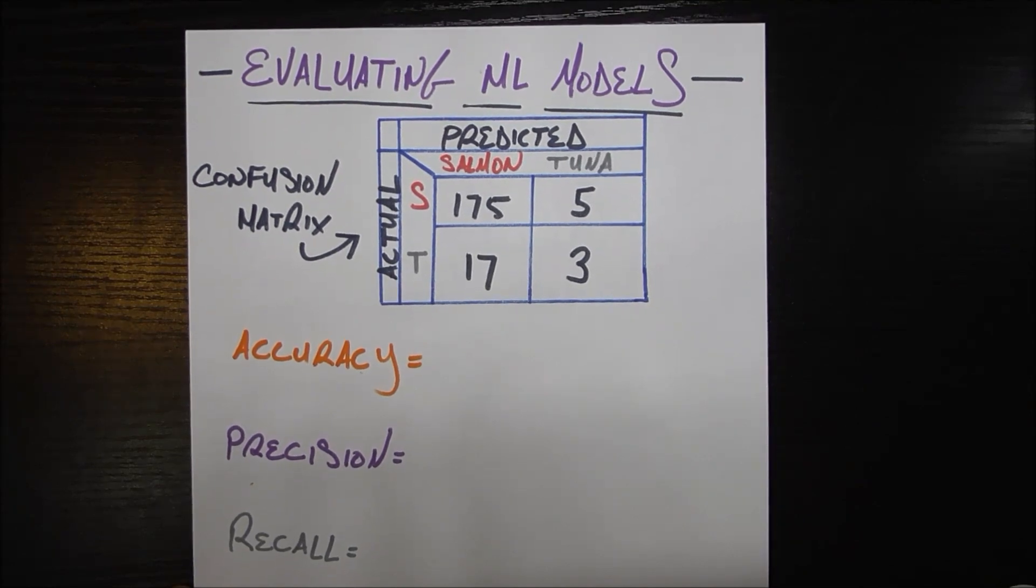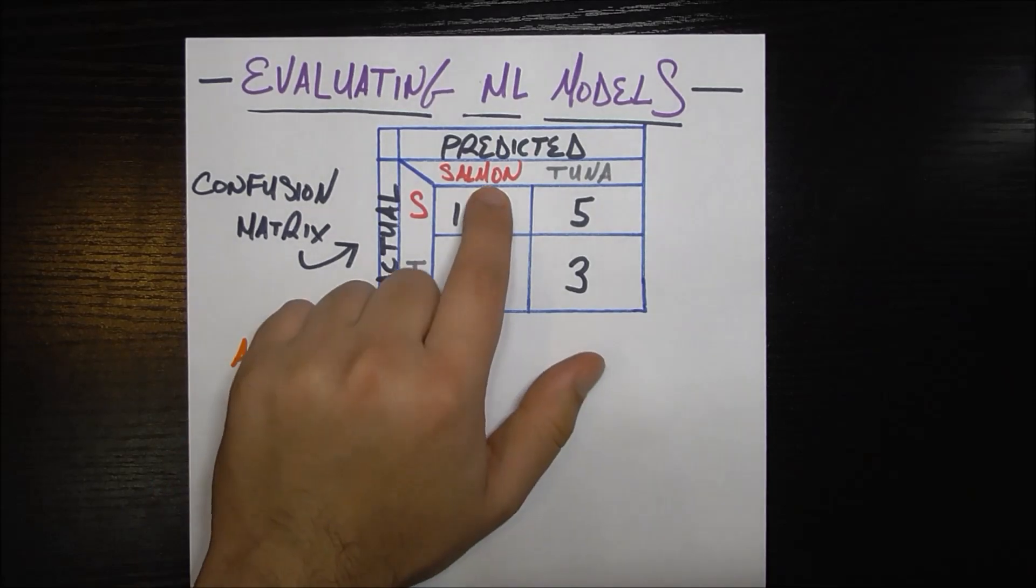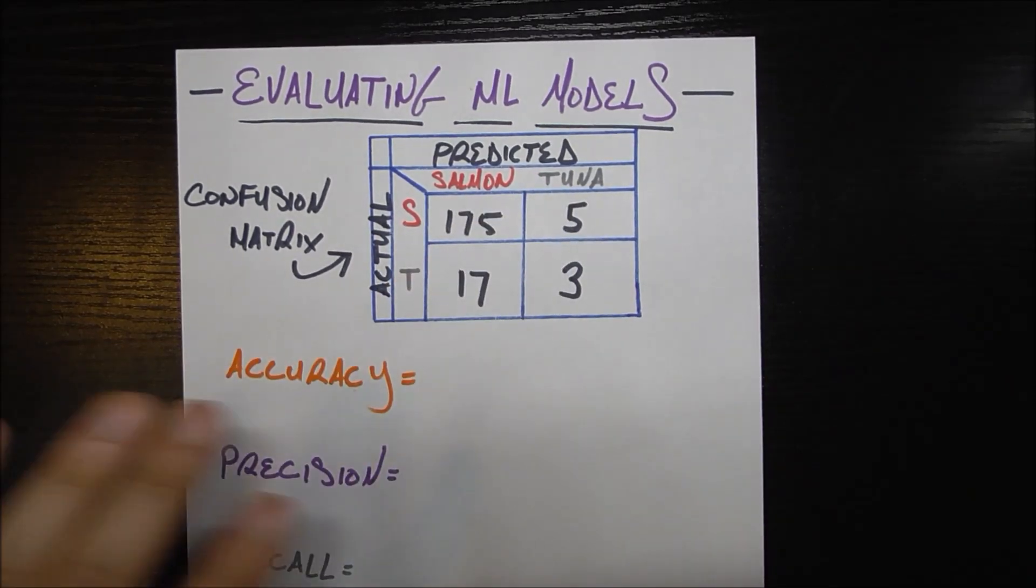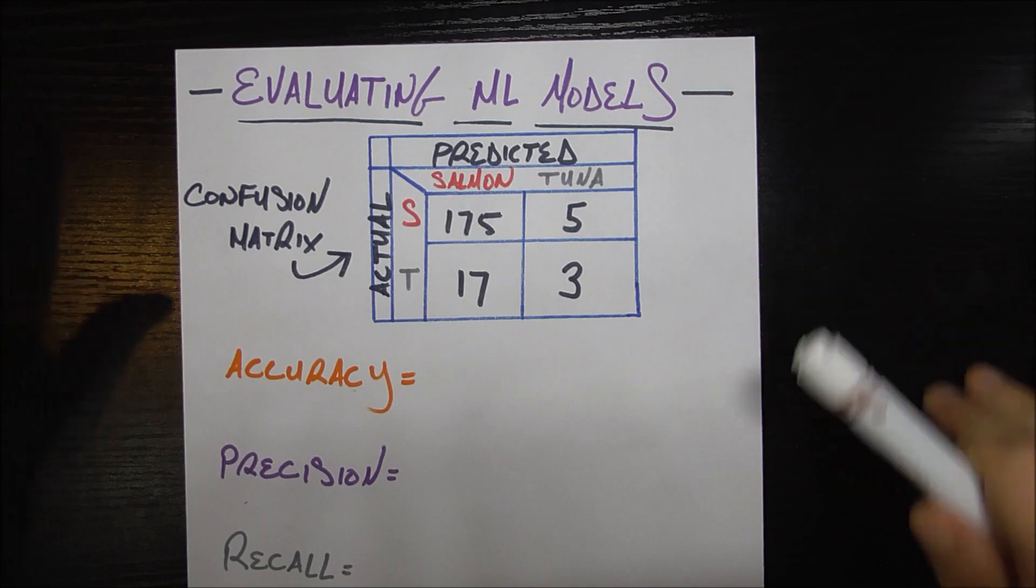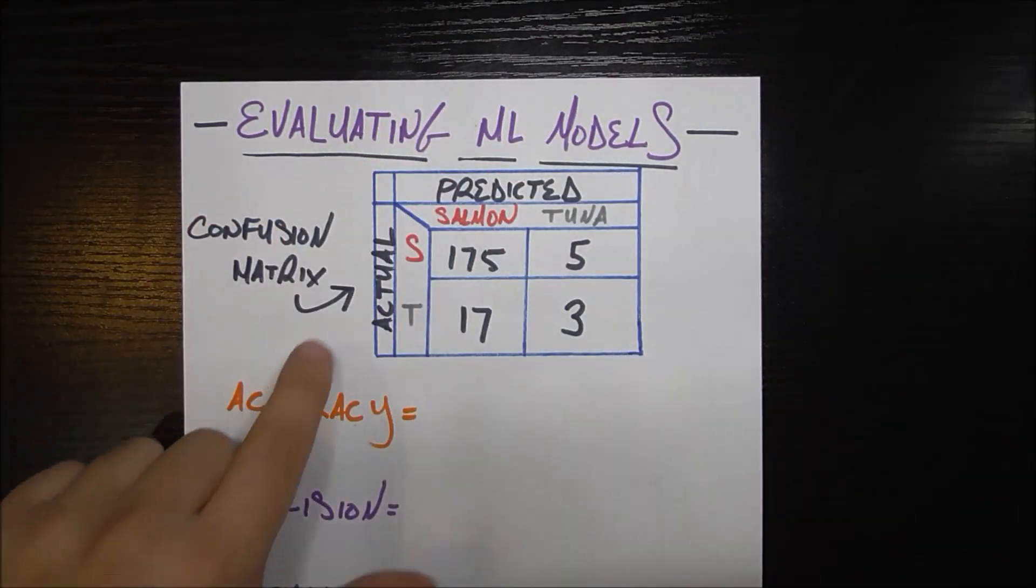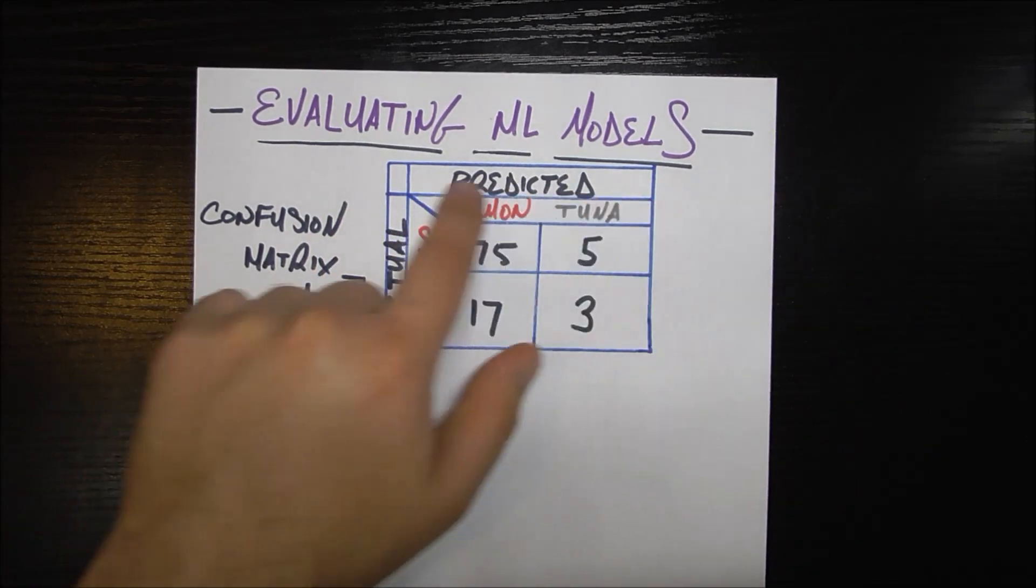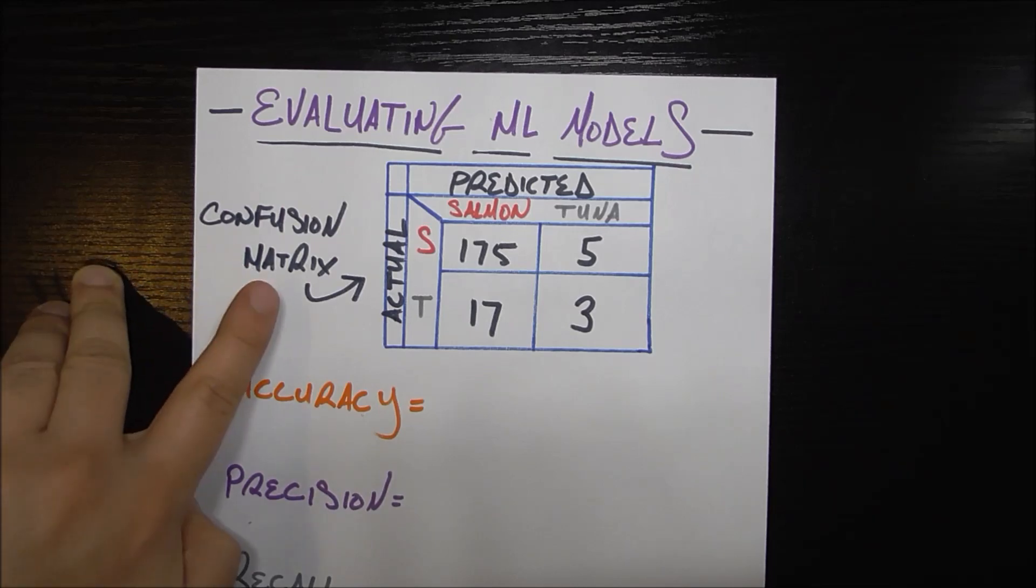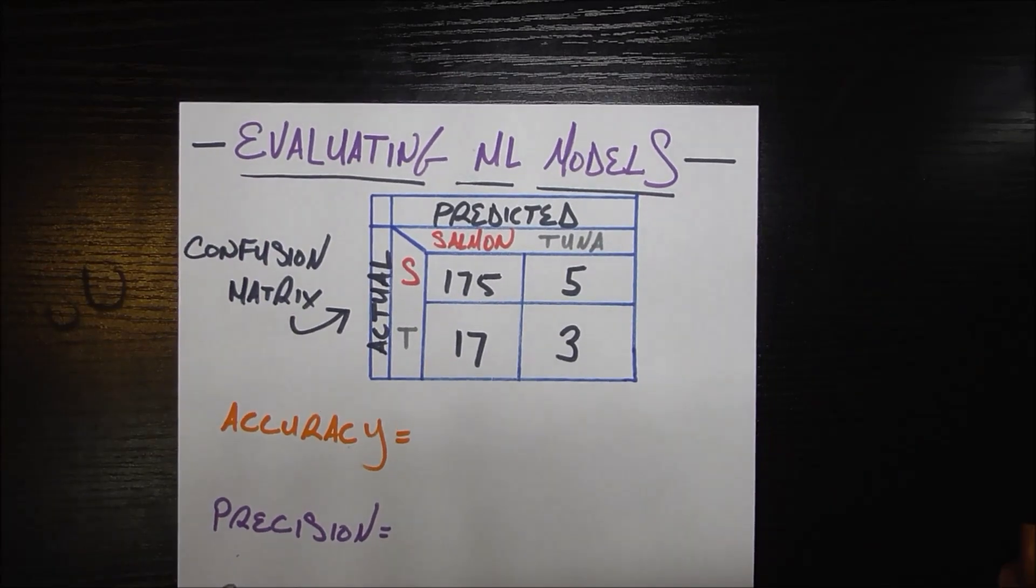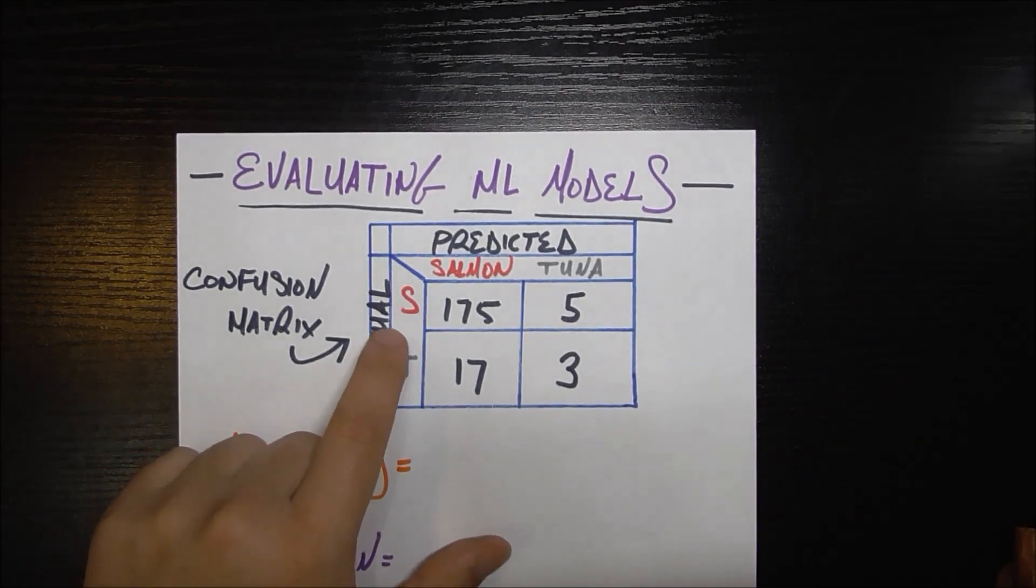We're going to be using the same type of framework we used in previous videos about classifying some mystery fish as either a salmon or a tuna. Let's say that we've run whatever machine learning algorithm that we want to run and these are our results. This type of matrix right here where we have our actual labels on the left and we have our predicted labels up here on the top is called a confusion matrix and it basically just tells us how many things we got correct out of each category that we predicted. Let's get a little bit familiar with this matrix before looking at the different metrics we'll use.